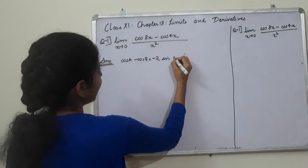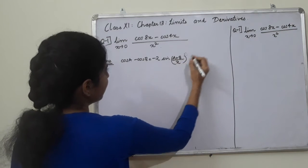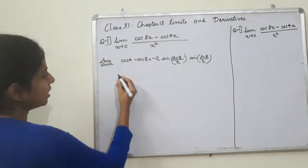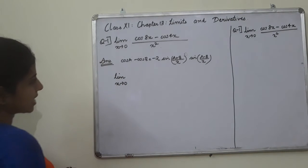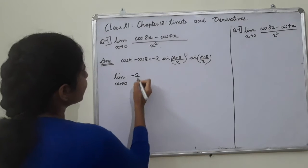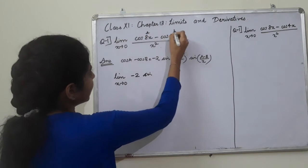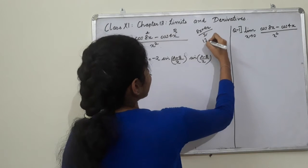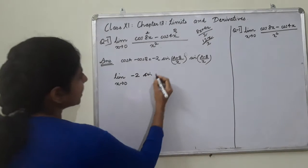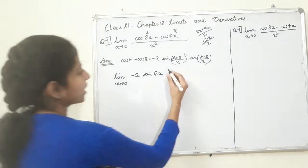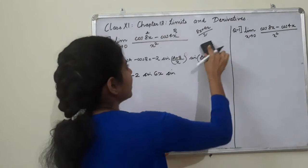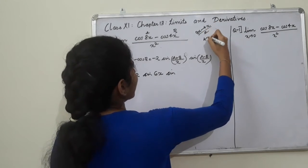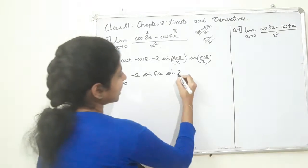We apply the formula: cos A minus cos B equals negative 2 sin((A plus B)/2) sin((A minus B)/2). So, limit as x tends to 0. For A equals 8x and B equals 4x: (A plus B)/2 gives (8x plus 4x)/2 equals 12x/2 equals 6x. And (A minus B)/2 gives (8x minus 4x)/2 equals 4x/2 equals 2x.